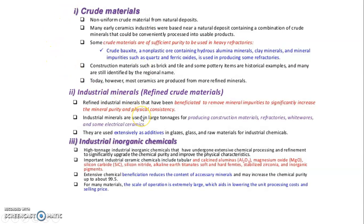Crude material refers to non-processed crude material from natural deposits. In many ceramic industries, the natural deposit contains a combination of crude minerals. Crude material is an important component for manufacturing ceramics.